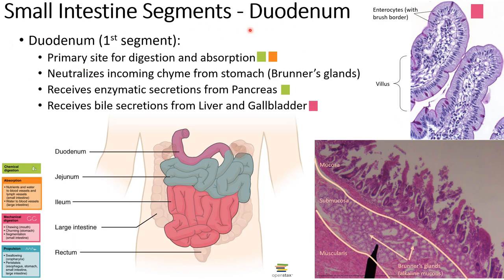Now let's look at the different segments of the small intestine because they have slightly different functions or specializations, and we'll also look at their histological structure. The first section is the duodenum — relatively short, coming right after the stomach — and this is the primary site for digestion and absorption. A lot of chemical digestion starts here, with a lot of initial breakdown achieved in this first segment. Also, a lot of absorption is going on because this will be very nutrient, mineral, and vitamin rich, which through passive diffusion and energy gradients will be easier to absorb right away.